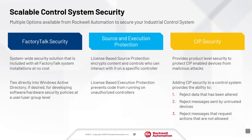We've also got another layer of control system security called Source and Execution Protection. This is a license-based solution: with Source Protection, we can encrypt the content and control who can interact with content specific to a controller. You can also leverage license-based Execution Protection to further secure a given asset and prevent code from running on unauthorized controllers. For example, if you're an OEM who deployed a ControlLogix solution to an end user, that runtime would only run on that specific controller and not be downloadable or runnable on any other controller globally.